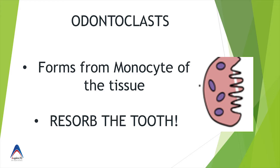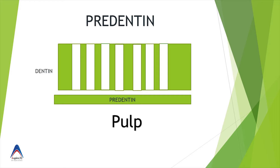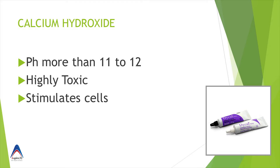A cell meant to resorb the tooth is called an odontoclast, while cells involved in resorption of bone are called osteoclasts. The third important point is something called pre-dentine. Pre-dentine is the layer just beside the pulp, below which the odontoblast cells stay, and through which the dentinal tubules pass into the rest of the dentine. The pulp is separated from the dentine by this pre-dentine layer.